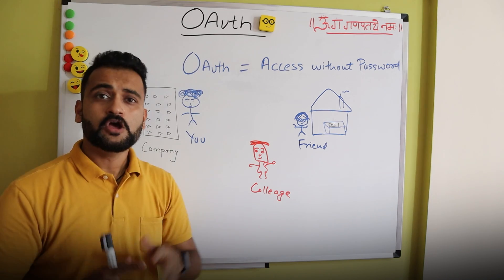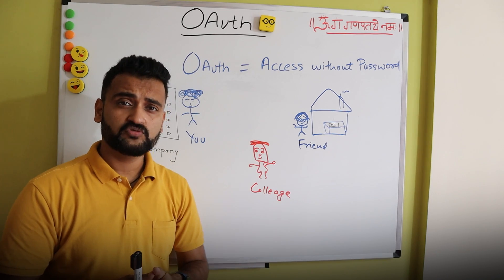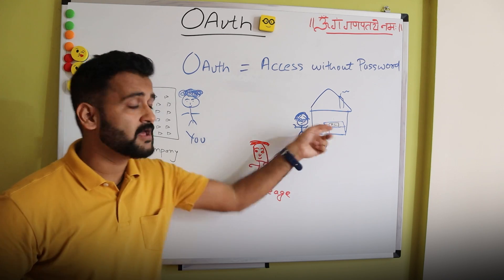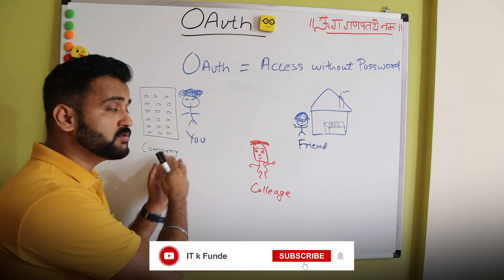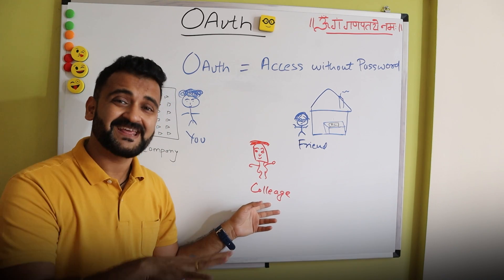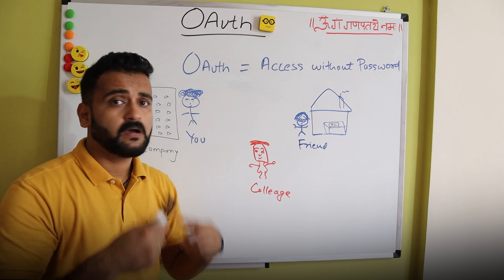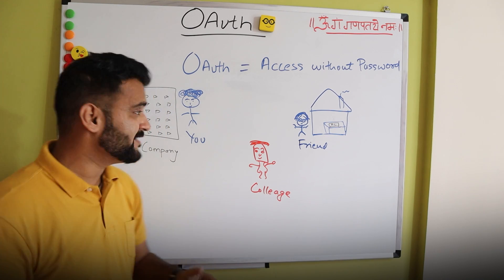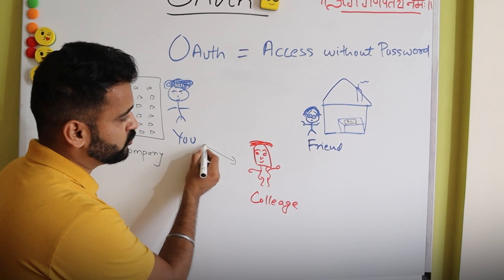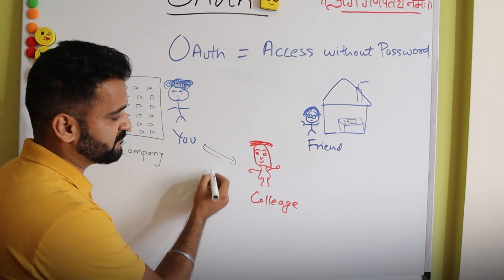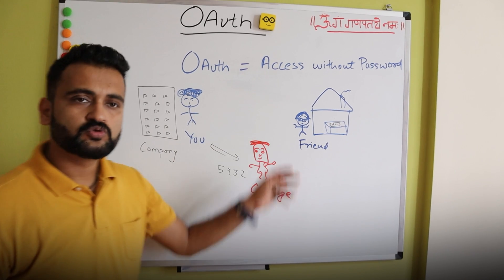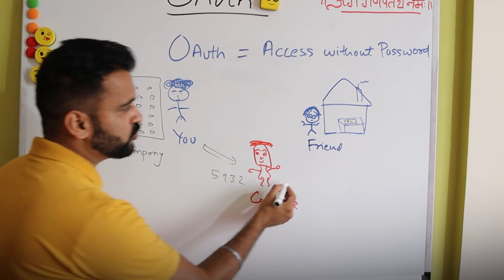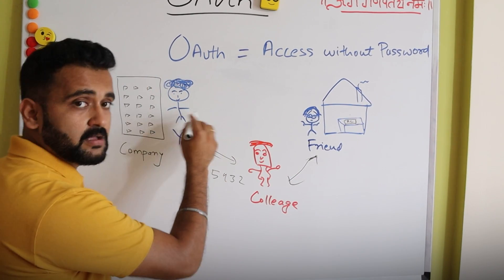Suppose you and your friend live in the same house, and one day while you are at your company attending an important meeting, you realize that you have left your access card on the table. You can't go there quickly, so you ask one of your colleagues who stays nearby to go visit your friend and ask him for the access card. Now this colleague does not know your friend, and your friend doesn't know this colleague, so you give a secret passcode to the colleague — say, your date of birth — and tell him to quote it to your friend.